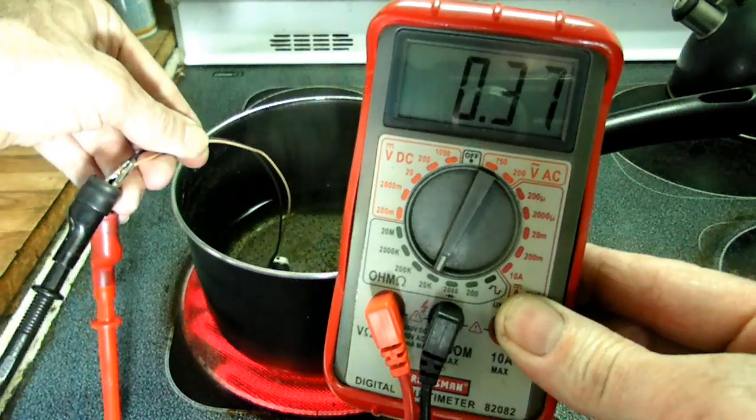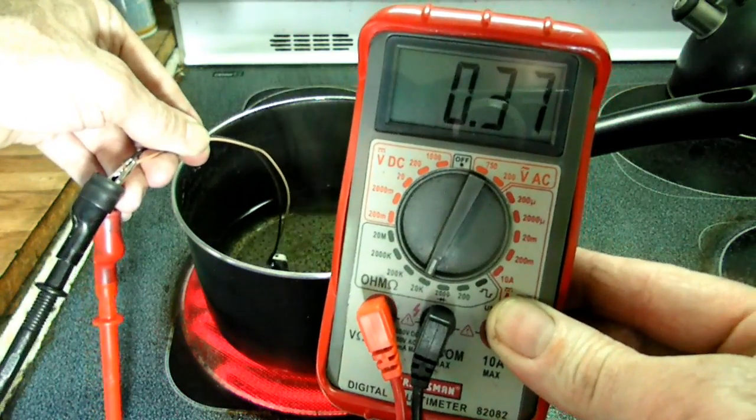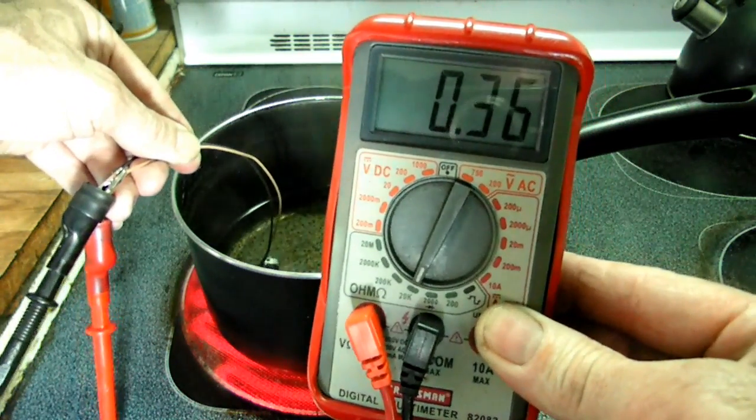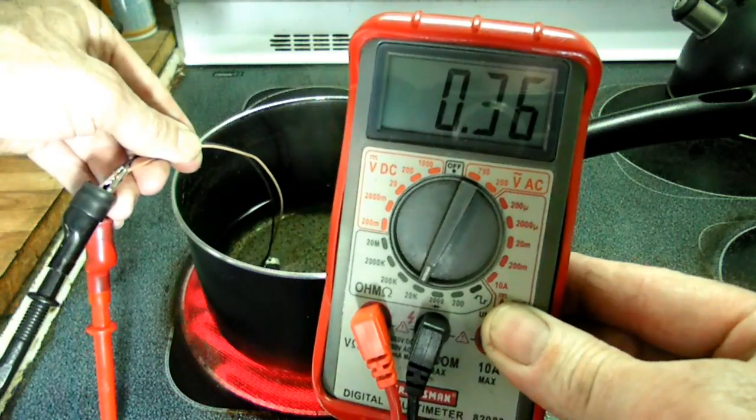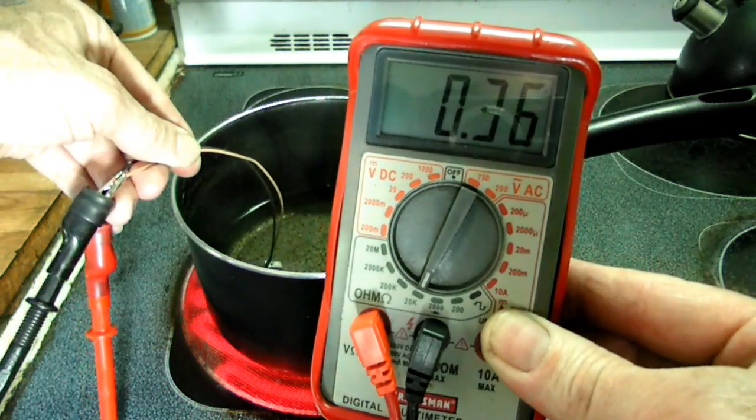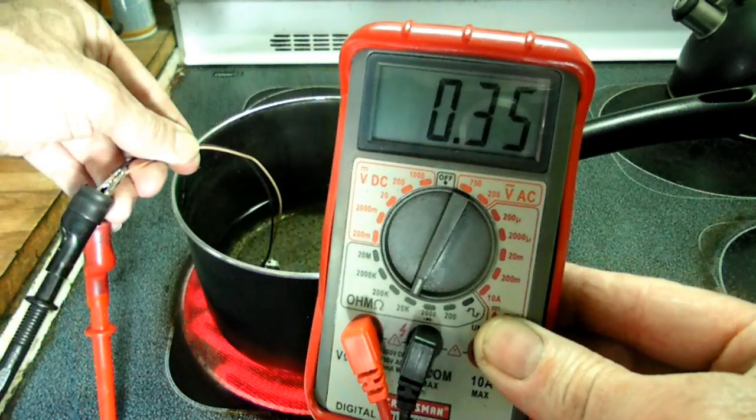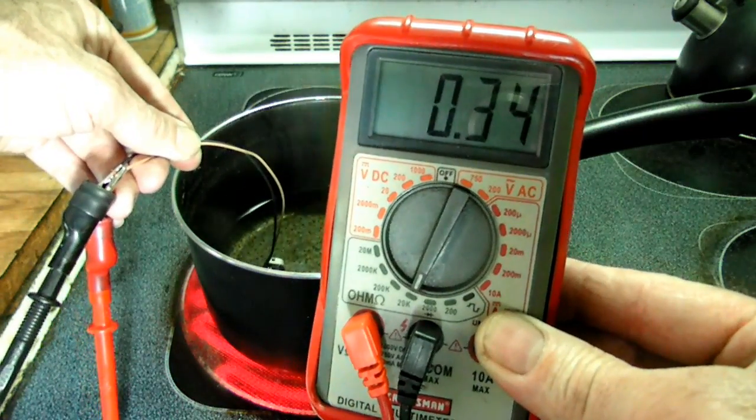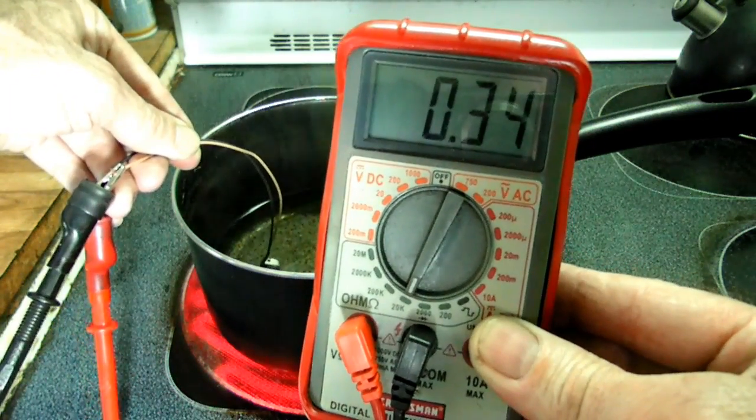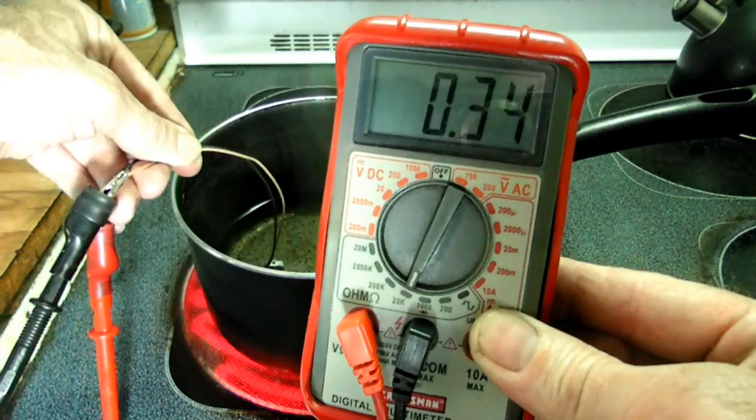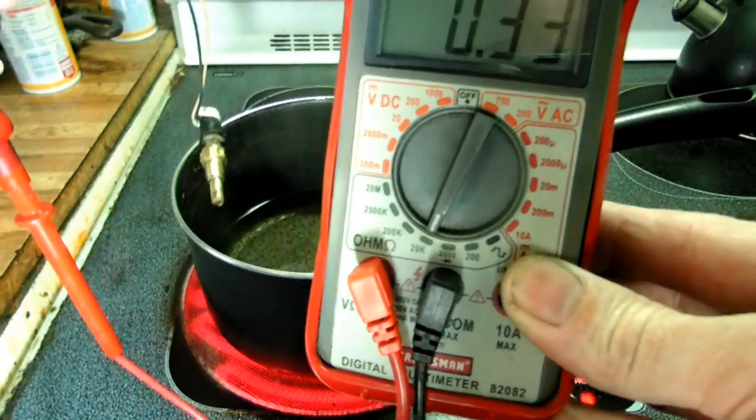Now what I could have done was put a thermometer in there to actually check the temperature of the water per resistance. But we're just checking which way the resistance goes. And as we know now, the resistance goes down as the temperature goes up.